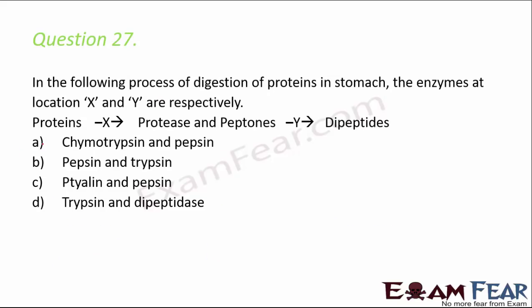Question number 27: in the digestion of proteins in the stomach, the enzymes at location X and Y are respectively. Since initiation of protein digestion happens with pepsin, X is pepsin. The correct option is B. Y is trypsin, because trypsin converts proteases and peptones into dipeptides.